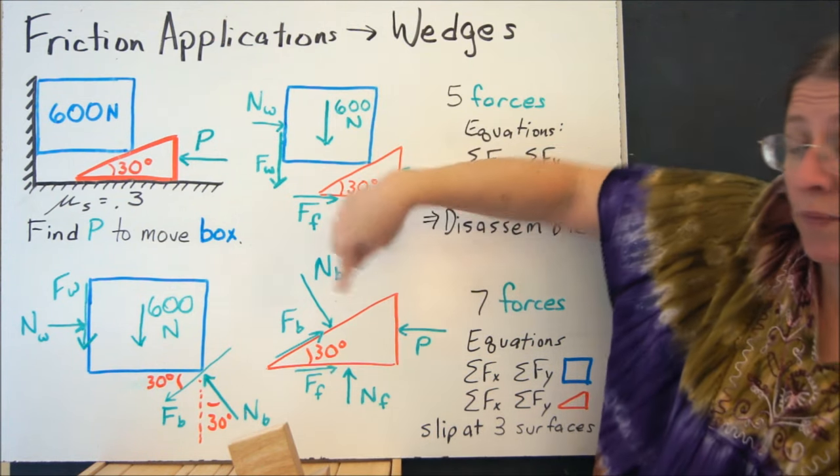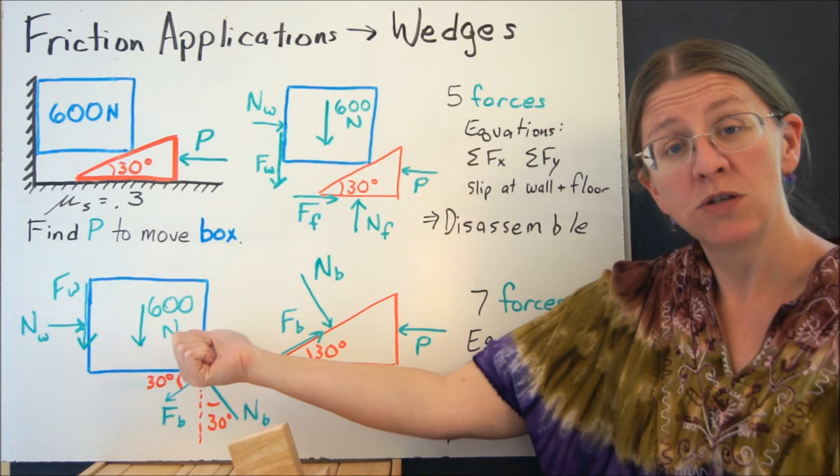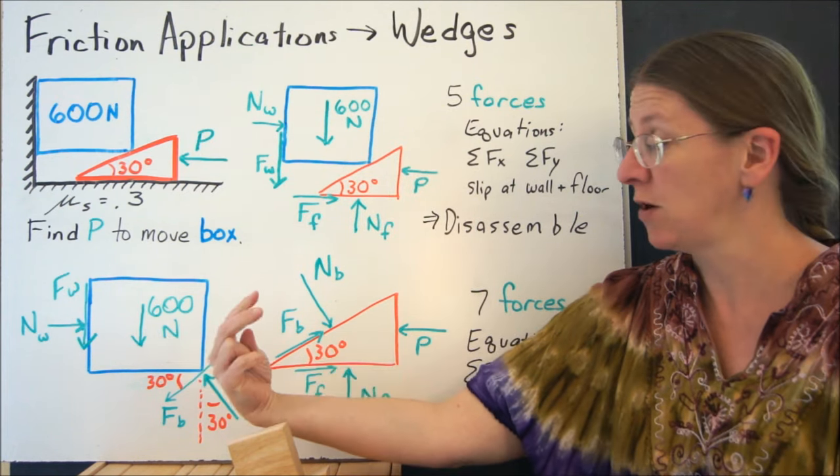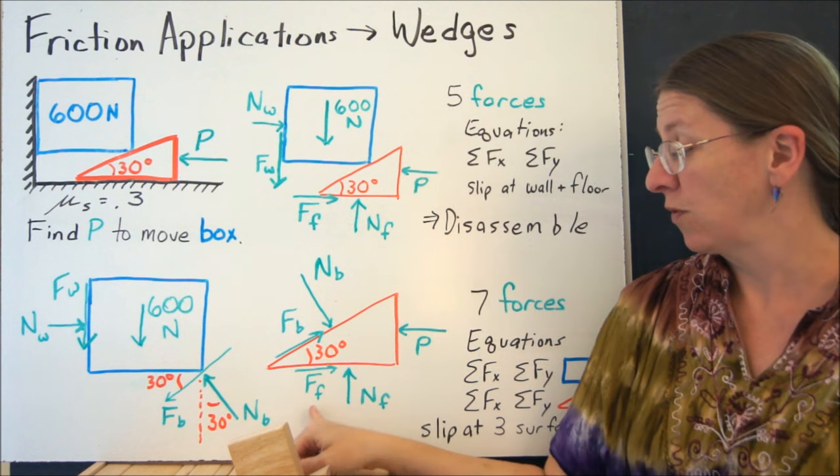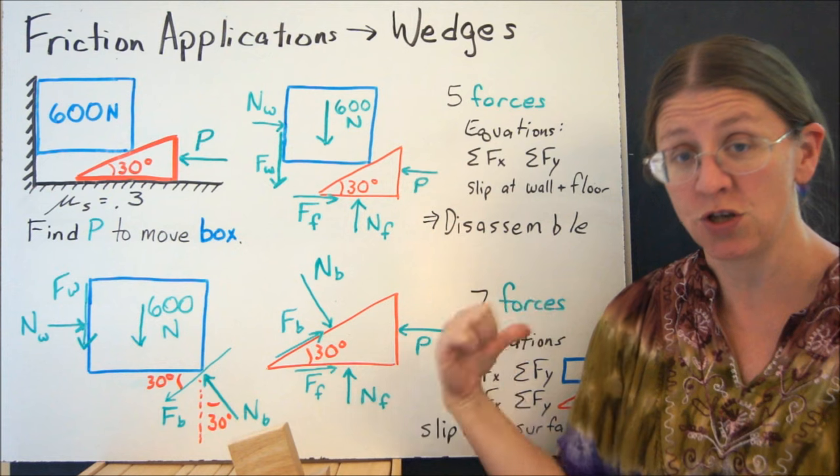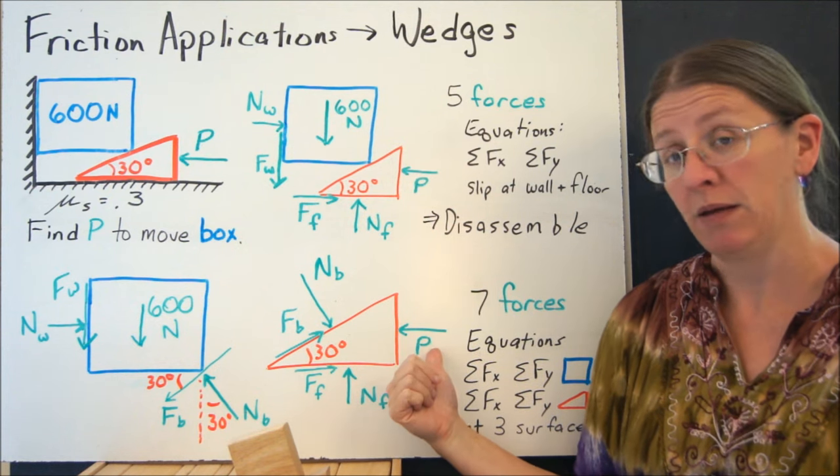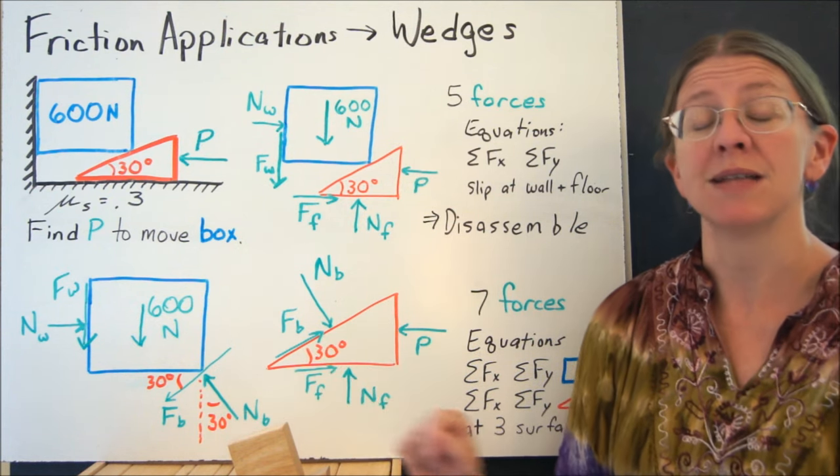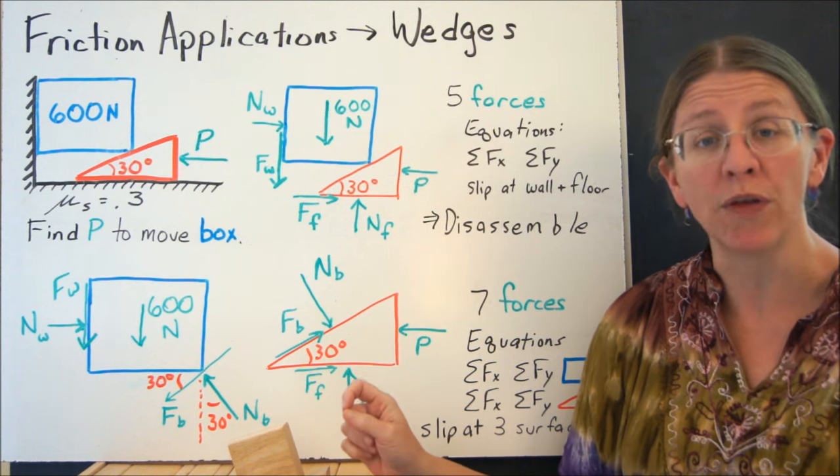So let's look at what the free body diagram for the wedge looks like. If you start here, as it moves to the left, friction has to oppose that motion. So the friction at the floor is going to be to the right, opposing P. Well, this now is a new friction force. It's not the same magnitude. You can't call them both F.